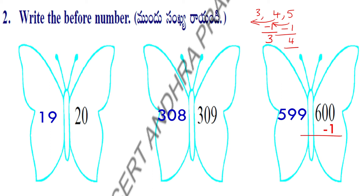If we subtract 1, we subtract 1 from the given number. If you have 9, the before number is 8. If you have 10, the before number is 9. If you have 5, the before number is 4. So the before number of 600 is 599. Now we will write the before number.